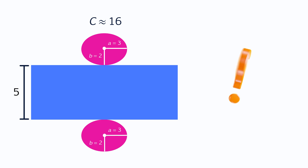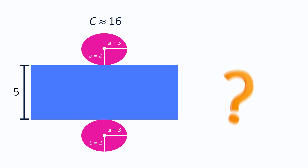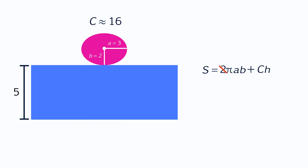Now, what would the surface area be if you had an elliptical cylinder without a bottom? The only difference is that you only include one base instead of two. So in the previous case, the formula was S equals 2 pi AB plus CH. But in a case where the cylinder lacks a bottom, you remove one base in the formula. The 2 in the first term gets taken out, giving S equals pi AB plus CH.